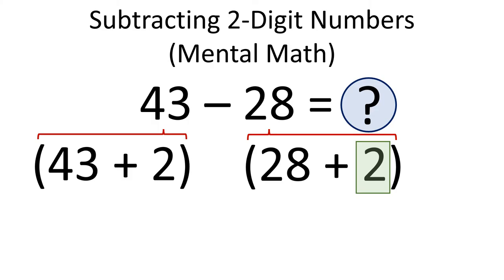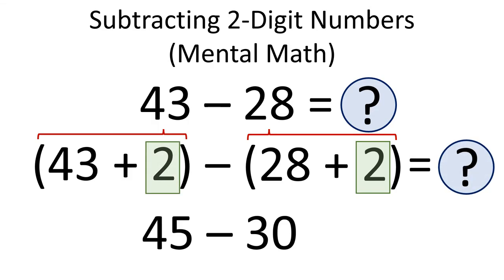So, we also add 2 to 43. That way, we have 45 minus 30.